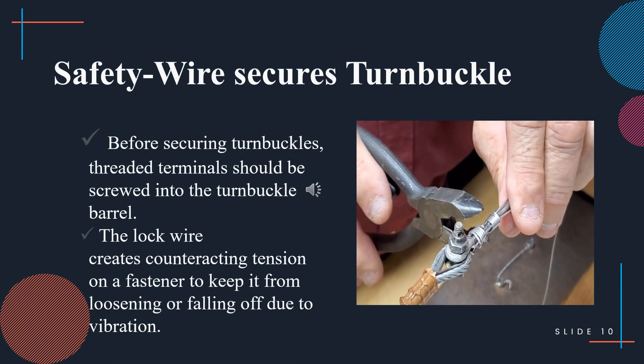Safety wires are bent so that each wire extends half the length of the turnbuckle on top and half on the bottom. The ends of the wire are passed through the hole in the turnbuckle eyes or between the jaws of the turnbuckle fork, as applicable.